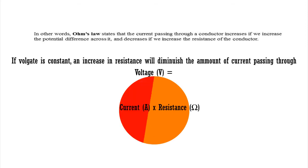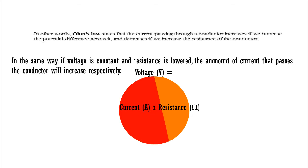In other words, Ohm's law states that the current passing through a conductor increases if we increase the potential difference across it and decreases if we increase the resistance of the conductor.